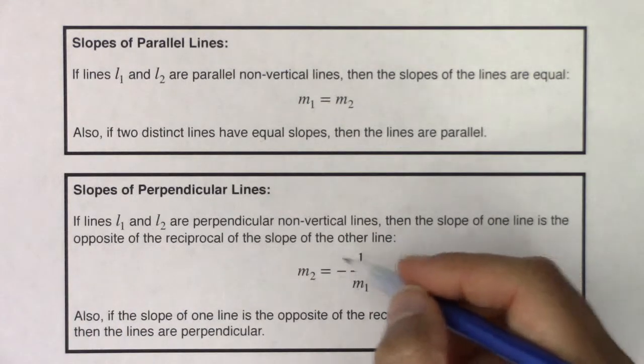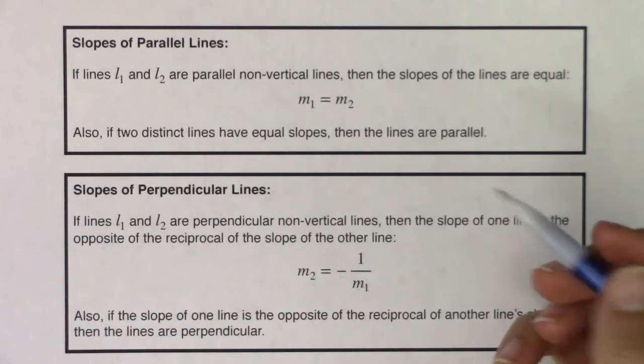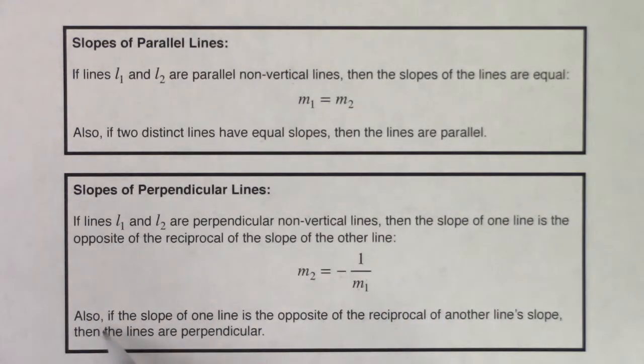All right, so you might also hear me say negative reciprocal instead of opposite reciprocal. All right, and again, it's an if and only if statement. If I see that the slope of one line is the opposite of the reciprocal of another line's slope, then they're perpendicular.